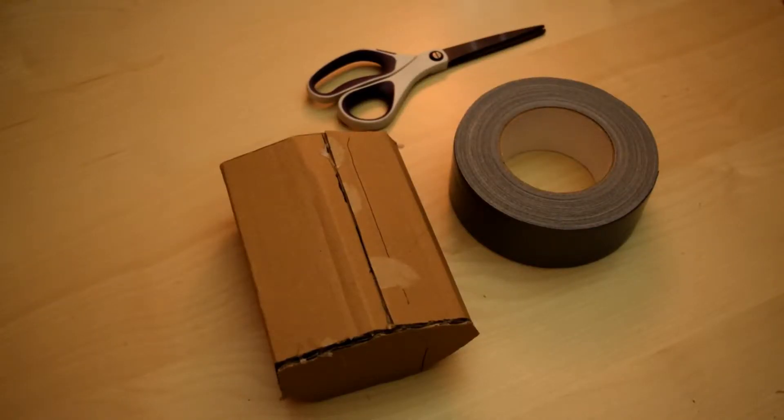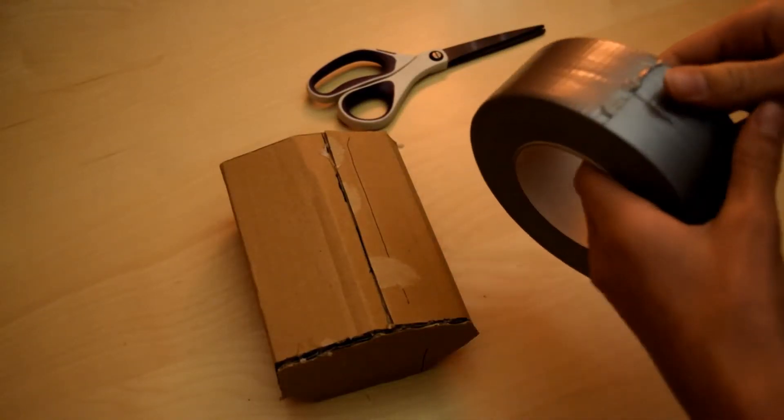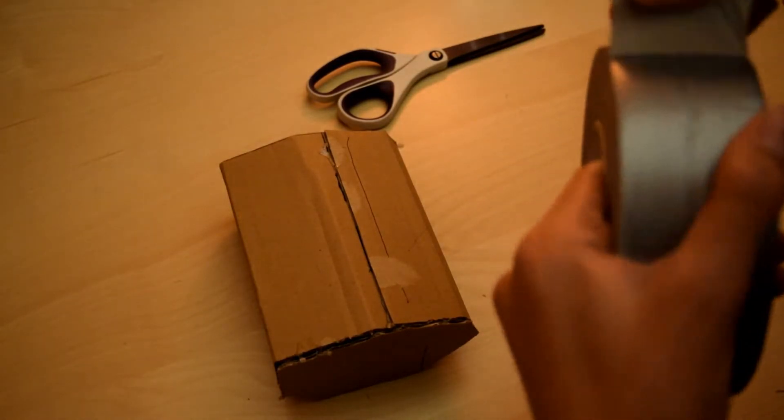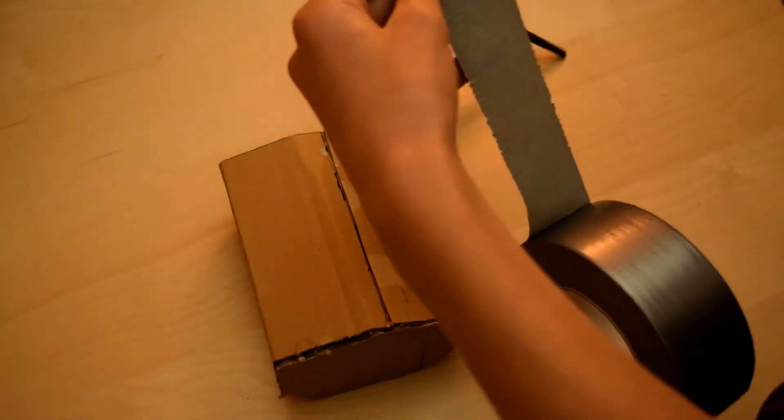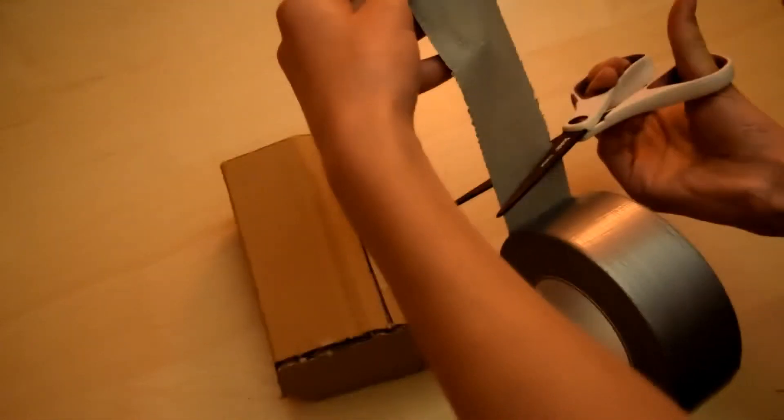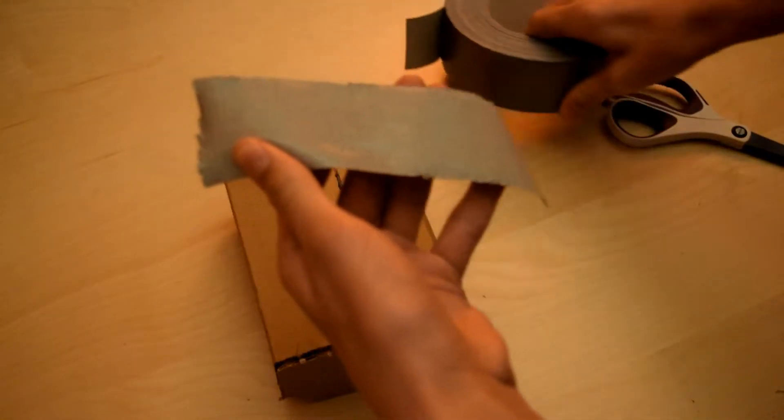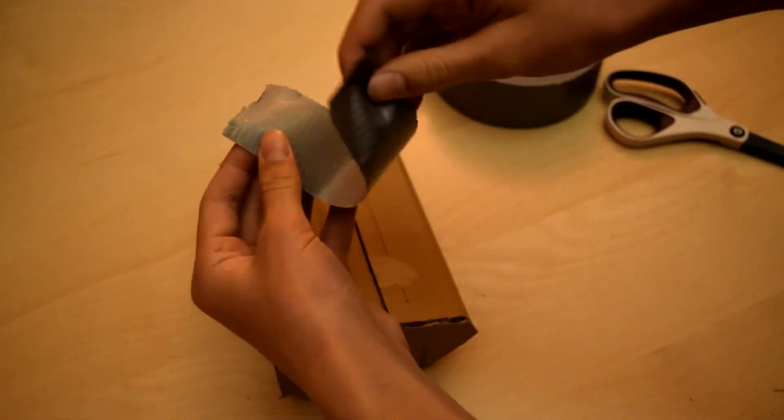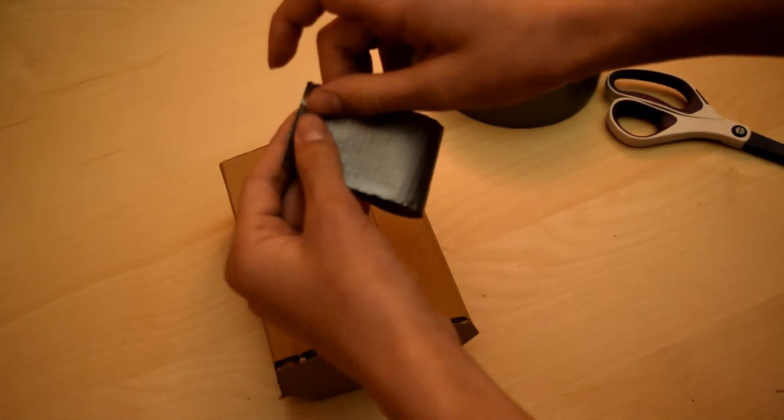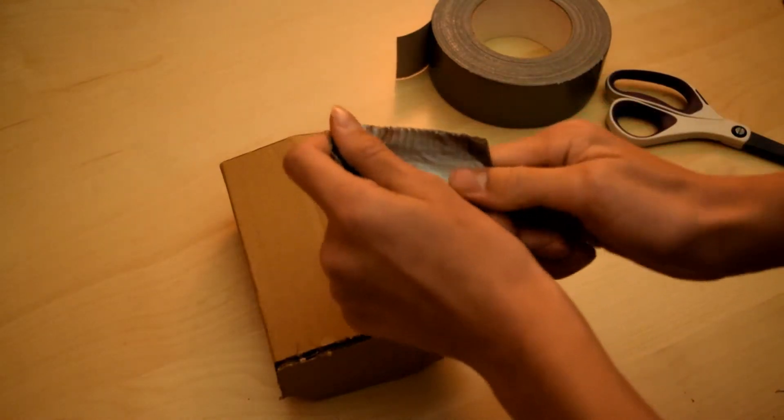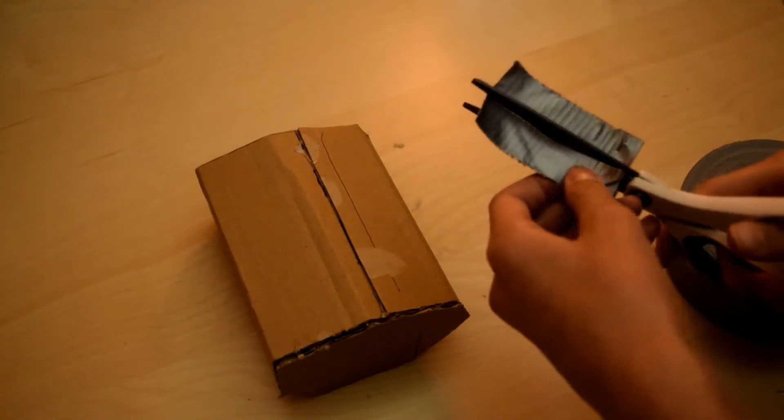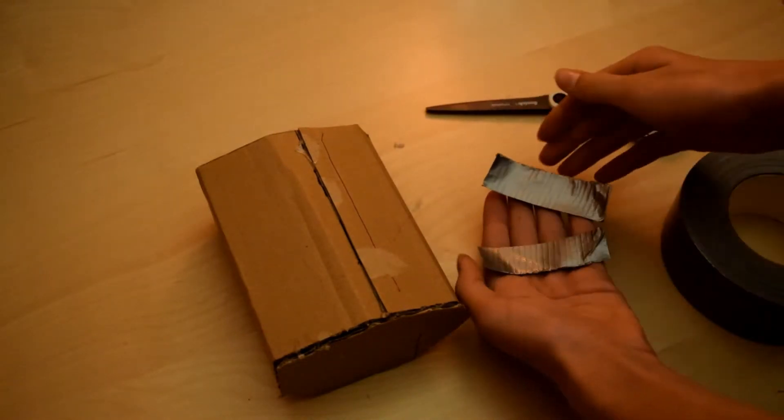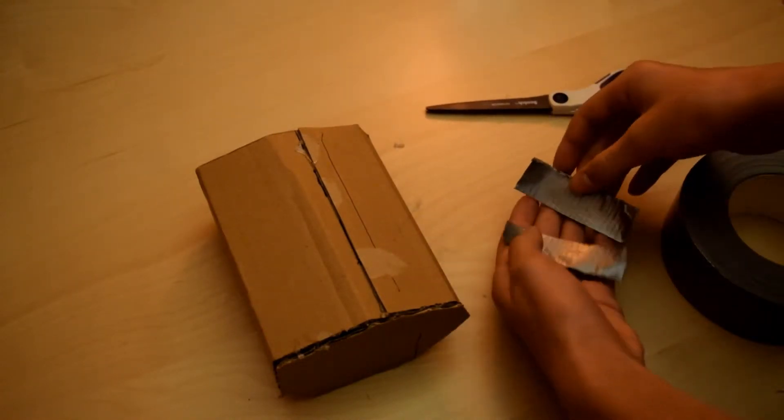Next we're going to make the belt loops. If you're doing the leg holster, you're still going to need to do this step. Take a strip of duct tape. You can tear it or use your scissors for a cleaner cut. Then fold it up so that you get one piece that's not sticky on either side and cut it in half lengthwise. These are going to be your two belt loops.